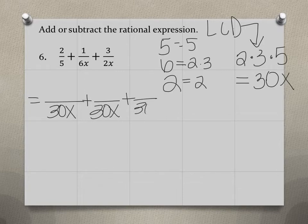So we can get equivalent fractions using 30x as our common denominator. So we want to think about what we need to multiply each rational expression by to get 30x in the denominator. So for the first one, 5 times 6x will give us 30x.